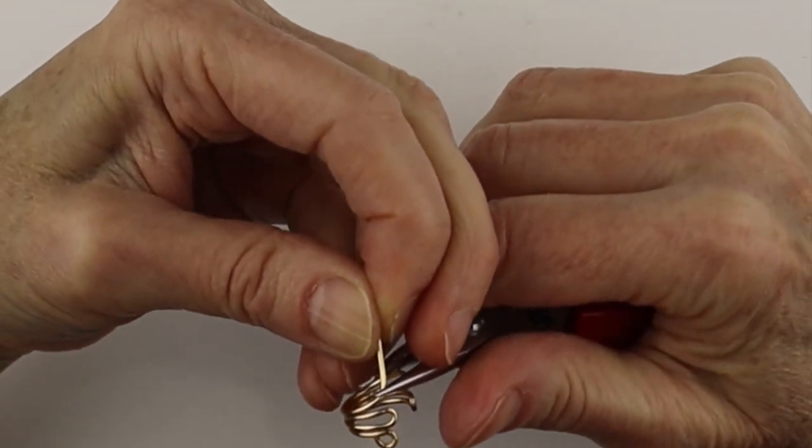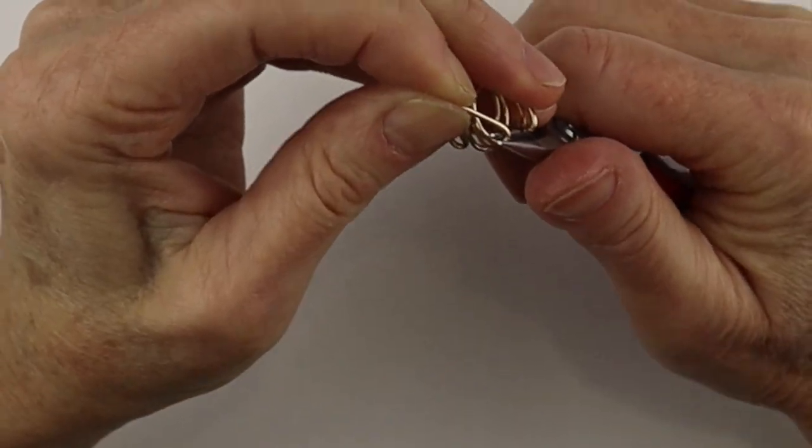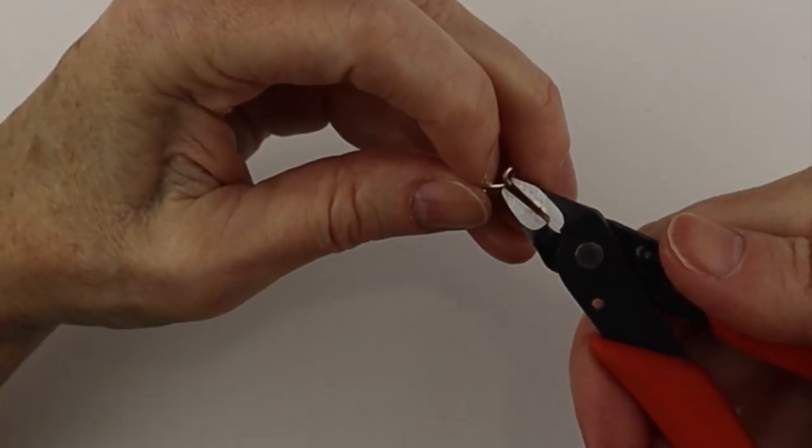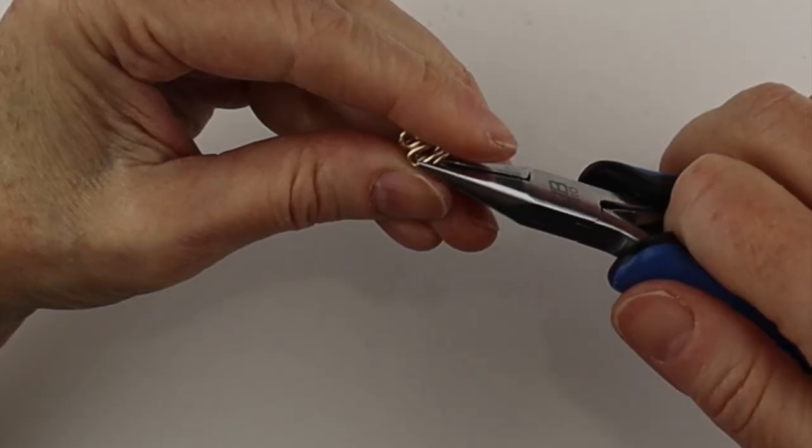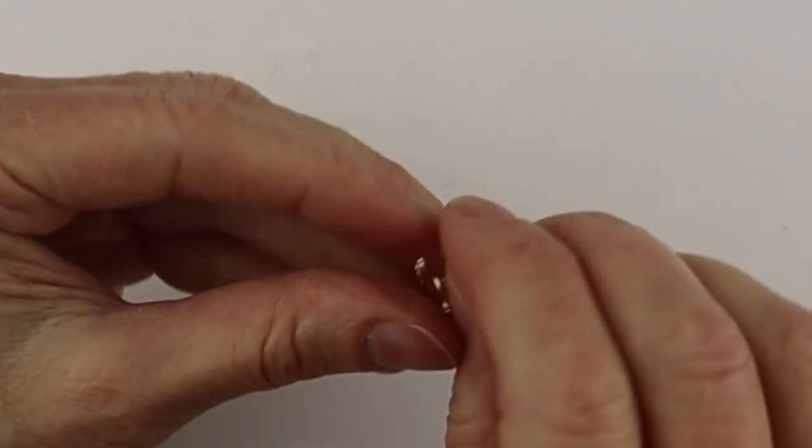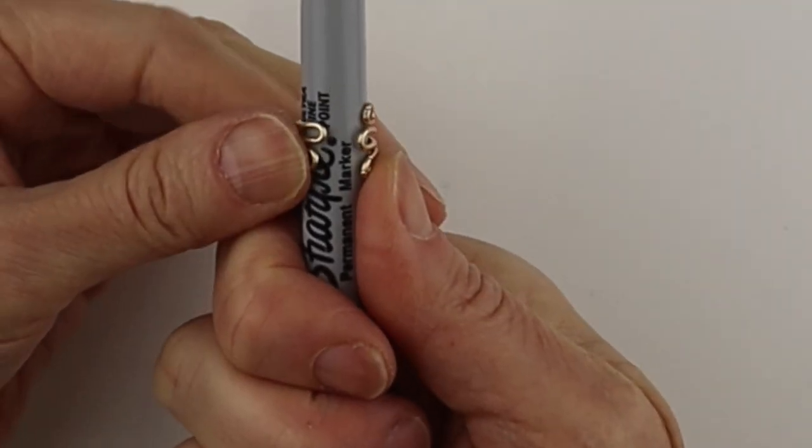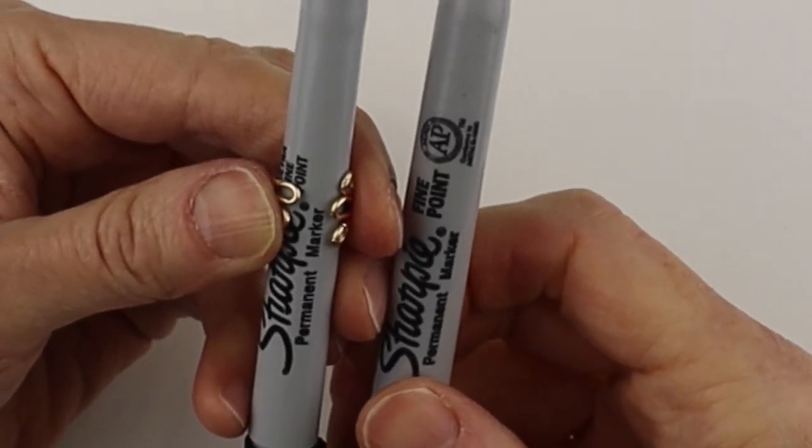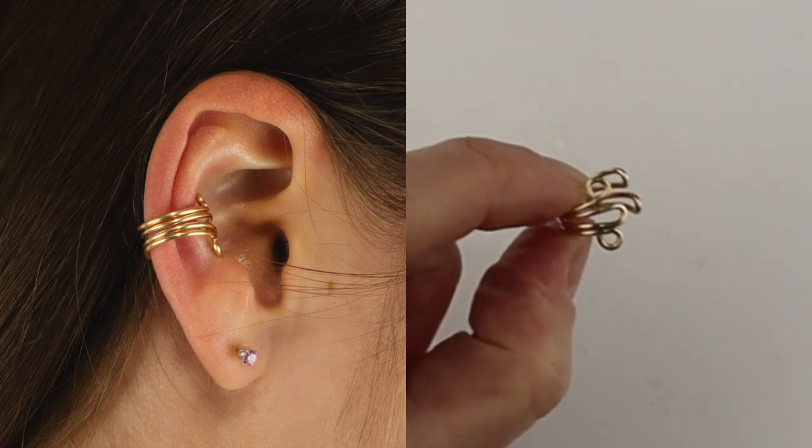So just do your turn and clip that one. Pinch it so it's flush. So this is going to be one side and this will be the other side. This is the smaller size Sharpie. You could do it on a larger Sharpie if you want. And there you have a very simple and classic ear cuff.